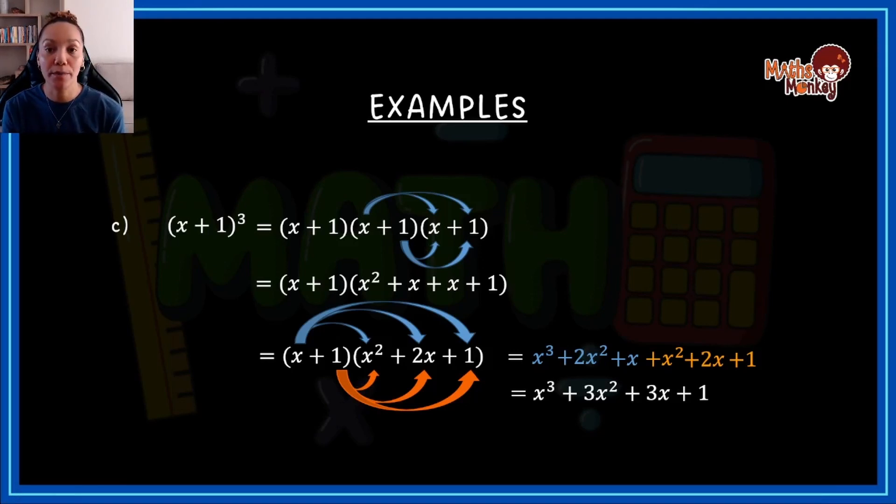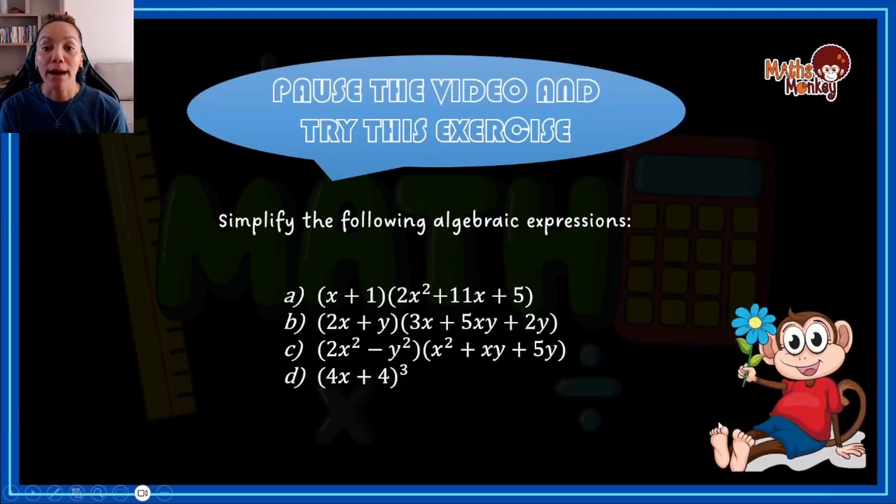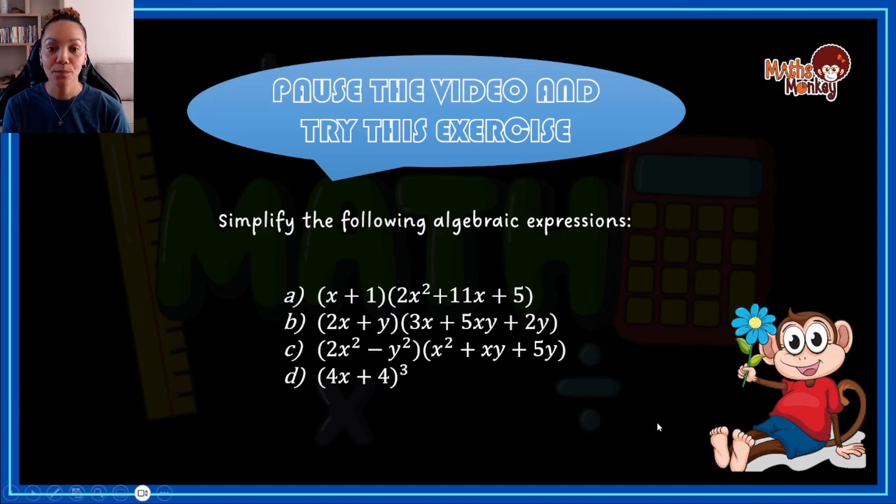So grade 10s, that is how you approach binomial multiplied by the trinomial. So what I'm going to do now is I'm going to give you this exercise. So I want you to pause the video here and I want you to attempt these four questions. And then unpause and I will give you the answers and you can see if you're on the right track with this work. Remember maths is all about practice, so I always include practice opportunity at the end of the lesson of my videos. So pause the video and then try this question and then I'll unpause when you are done.